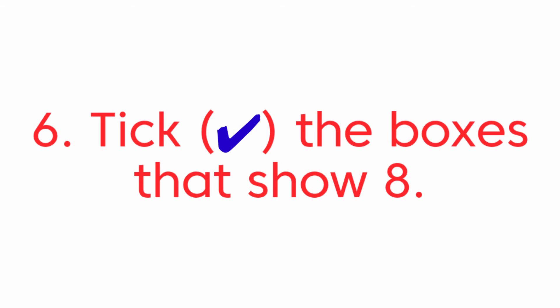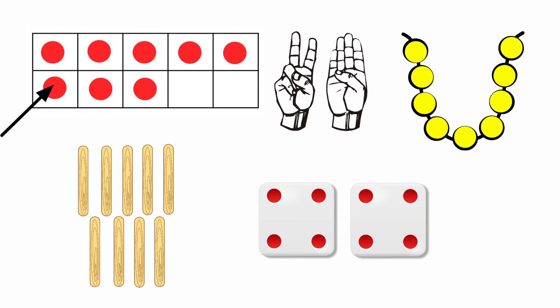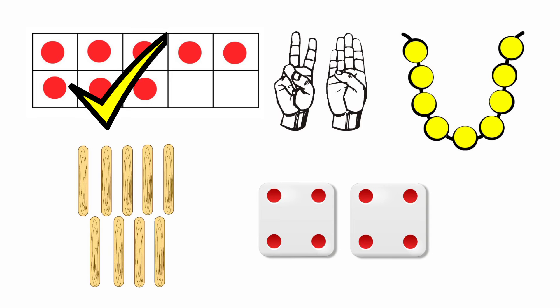Now look at the sixth one — tick the boxes that show 8. Look at the first one: they have given one, two, three, four, five, six, seven, eight — eight dots. They have given eight dots, so we are going to tick the box.